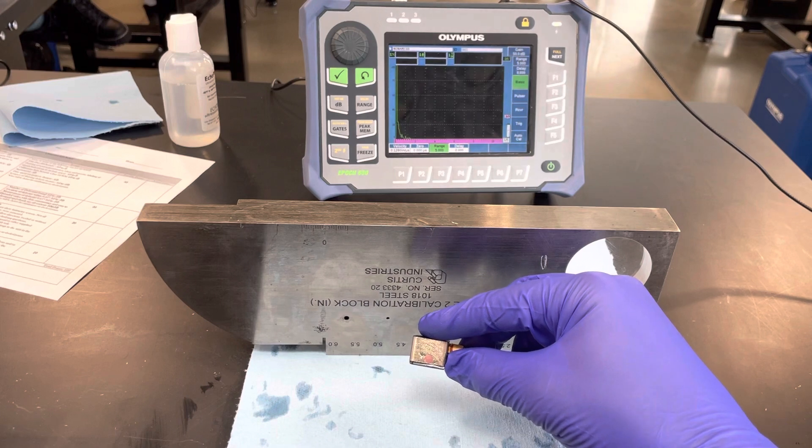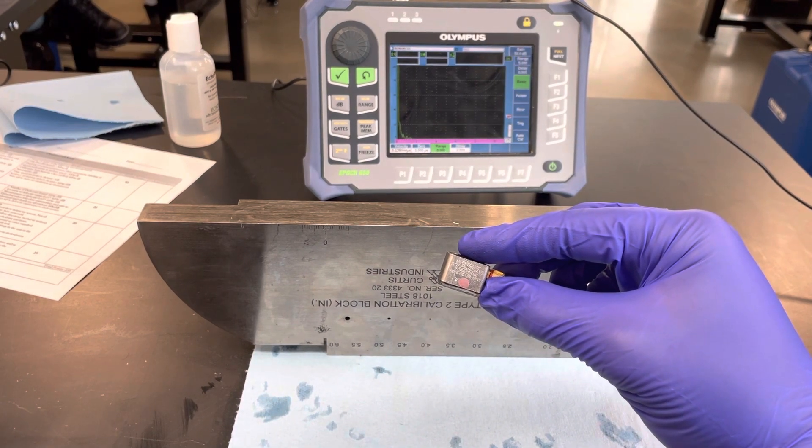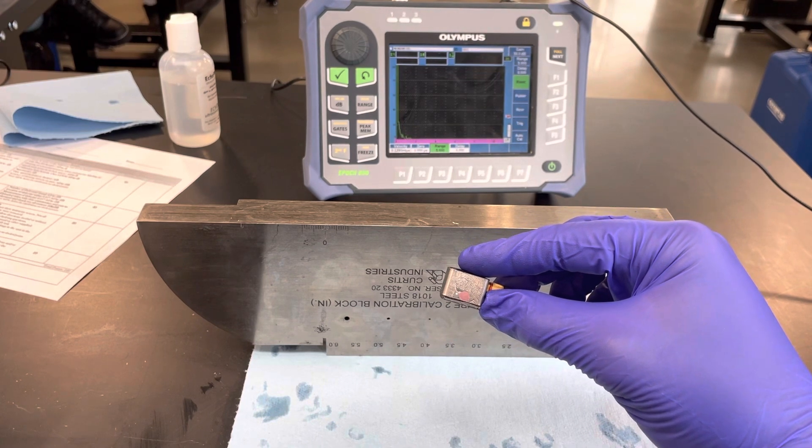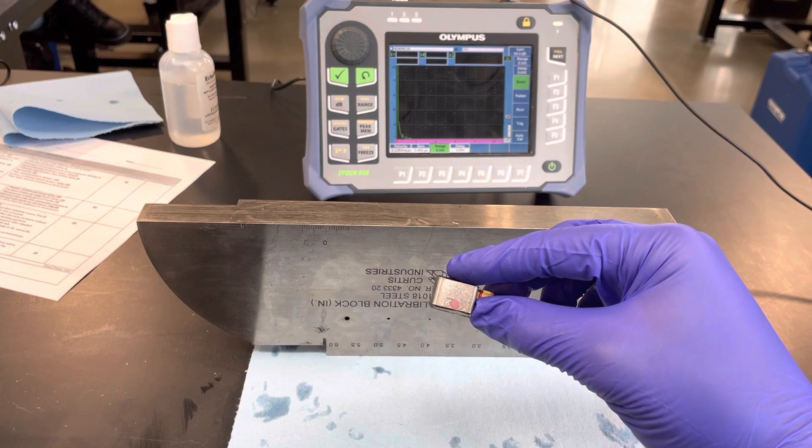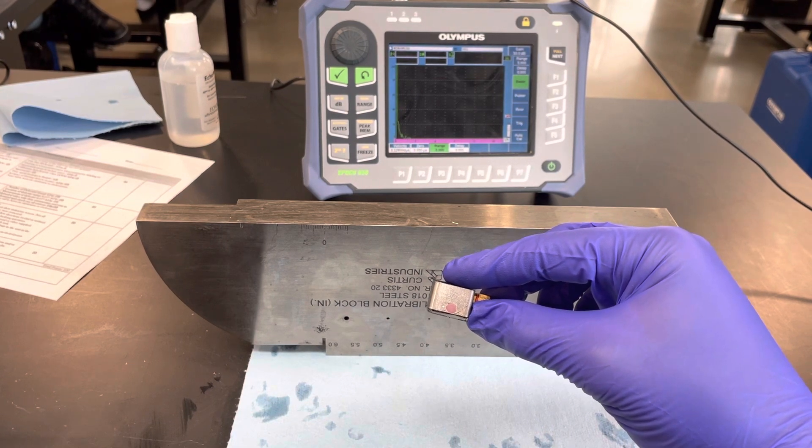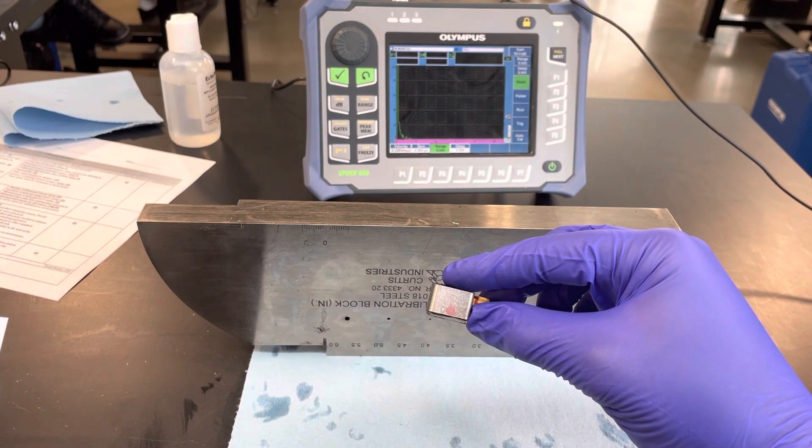Basically you can see on our transducer there's a little white mark, and that's the position that the transducer is pushing out the sound. We have our black mark at the zero, there's some white marks on there too.